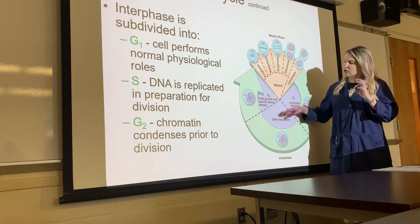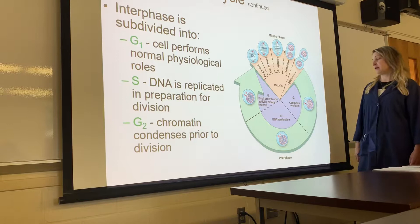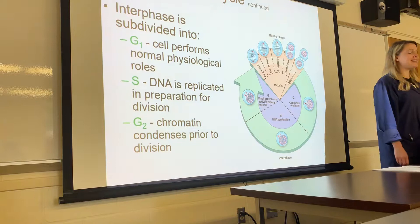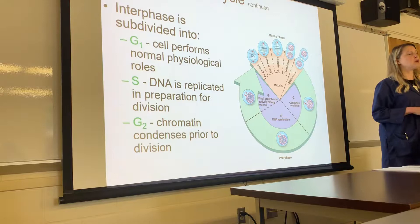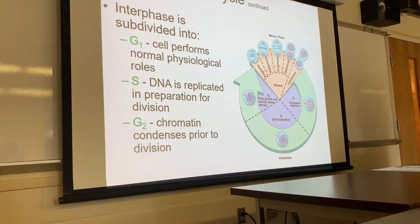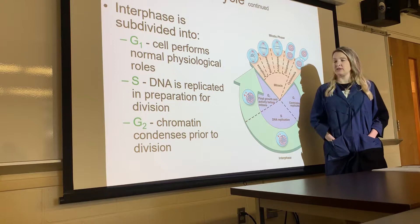There are three sub-portions to interphase: G1, S, and G2. In G1, the cell performs its day-to-day activities — a pancreatic cell produces insulin and glucagon. When it's time to divide, it enters S phase, the synthesis phase, where we replicate a complete copy of our DNA. All 46 chromosomes make complete copies of themselves so the new cell will have identical genetic components. Then G2 is the final growth phase before mitosis.